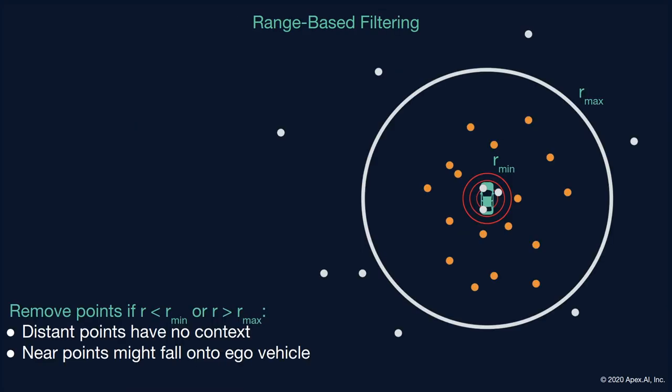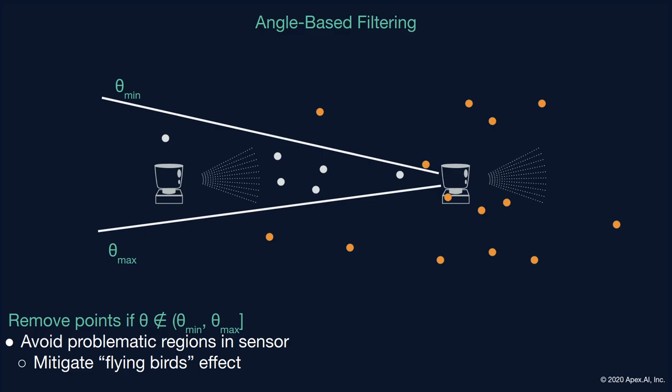Let's take a look at a couple of common preprocessing operations on LiDAR data. The first is range-based filtering, which is an example of removing useless or bad data. Points that are very far away from the sensor are useless because they don't really have any context — they're just noise. By contrast, points that are very close to the sensor can fall into the ego vehicle and negatively affect our result by providing false positive detections. Another example of removing bad data is angle-based filtering. There are regions in the LiDAR's field of view which don't work so well for various reasons.